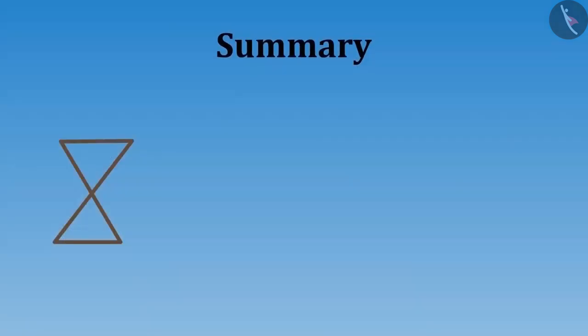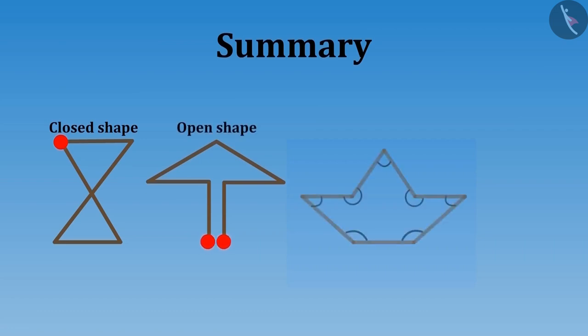In this video we have learned that if the starting point and the end point of a shape are same, then it is known as a closed shape. And if the starting point and the ending point of a shape are different, then it is known as an open shape.